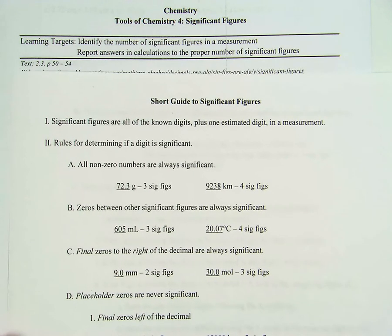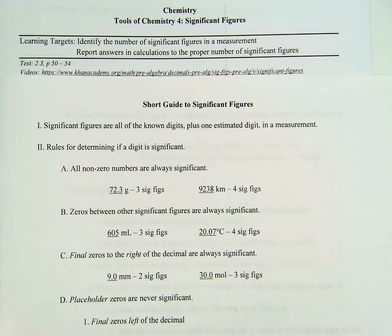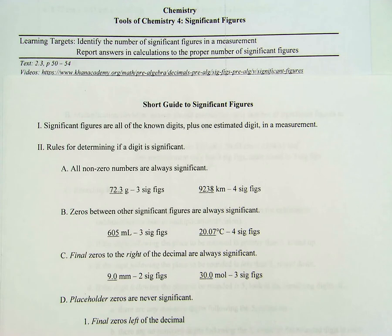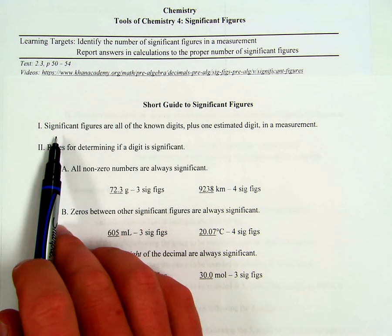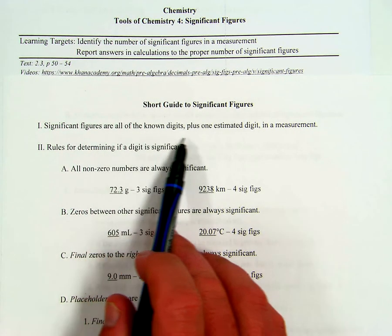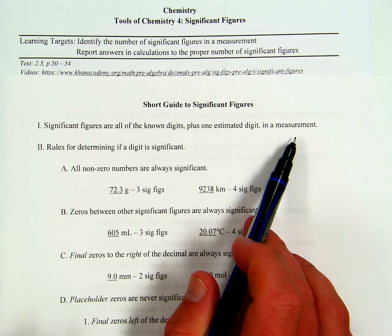Our short guide to sig figs. Recall from your measurement practice that we always record all of our known digits in a measurement, and then we always estimate that last digit based upon the divisions on our measuring device. These are all the significant figures — all of the known digits plus one estimated digit in a measurement. Sig figs only deal with measurements.